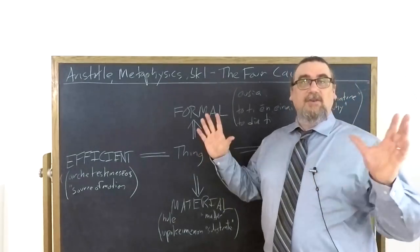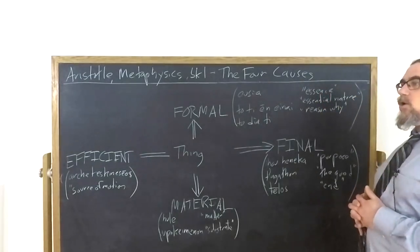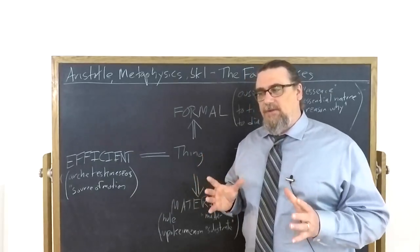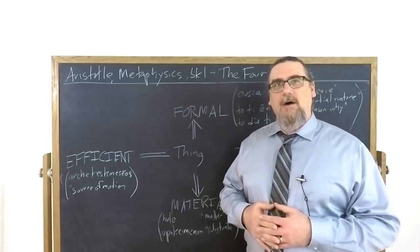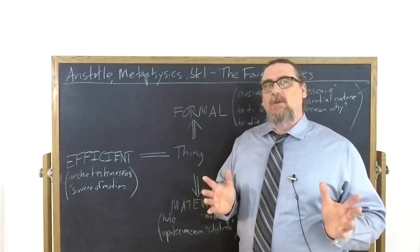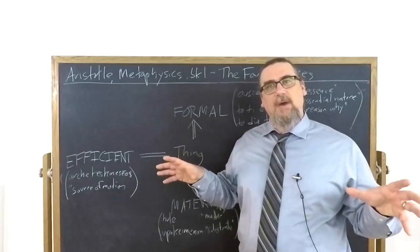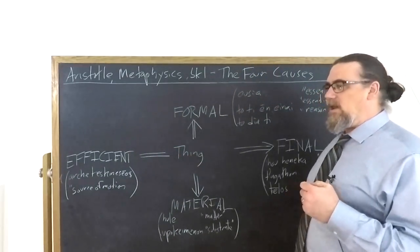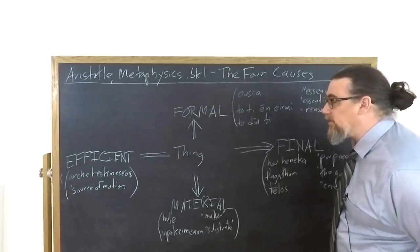Aristotle thinks that this is the totality of the things that can in fact be called causes in general. And this provides in his view a comprehensive picture of causality. So let's take a look at each one of these in turn and then think about how they come together. And we'll look at a few examples that he gives as well.